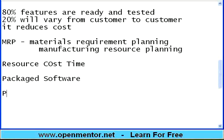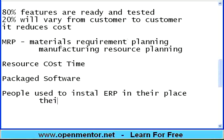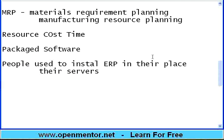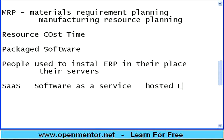Another trend is going on. Previously, people used to install ERP on their own servers, which meant managing servers, admin, AC, cooling, and power. Now there is a model called SaaS — Software as a Service — which is nothing but hosted ERP. You just pay for use. It's like email — already hosted, you don't have to maintain servers or power or people. Just start using. But for every month, for every user, there is a charge. It's like utility consumption — you pay for electricity based on consumption, or like a post-paid mobile billing where you're billed based on minutes used.